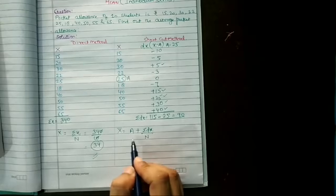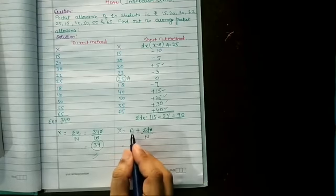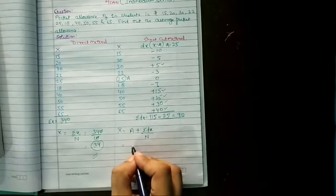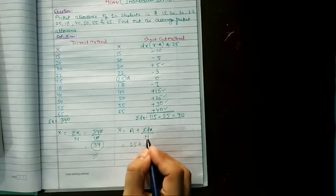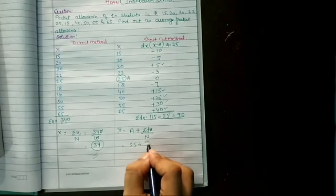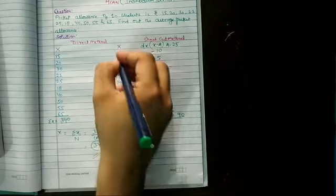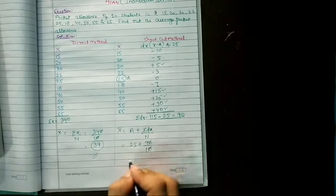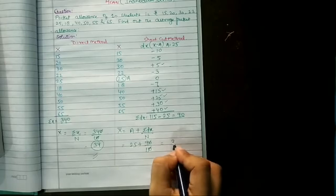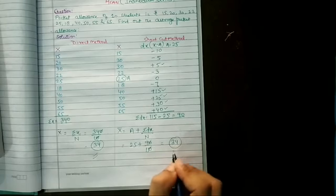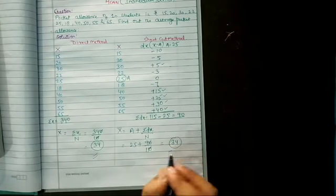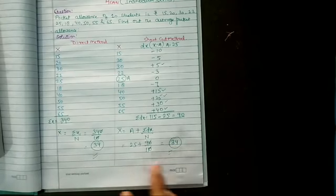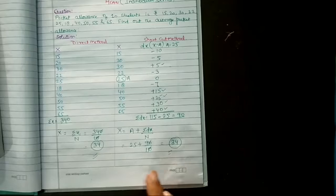Now put the values in the formula. A is 25, sigma dx is 90, n is 10. So: 25 plus 90 divided by 10 equals 25 plus 9 equals 34. This confirms our answer is correct. Keep revising. Thank you so much.